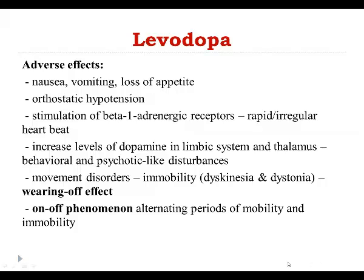Also, levodopa can stimulate beta-1 adrenergic receptors, so it can work like adrenergic drugs and cause rapid or irregular heartbeat, especially when levodopa is converted into dopamine in the peripheral circulation.